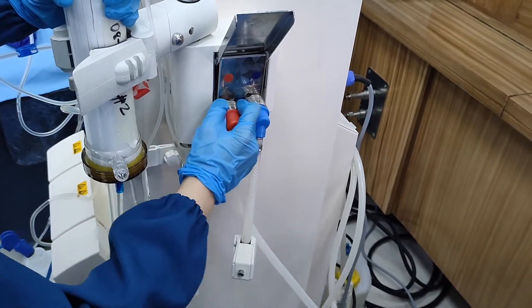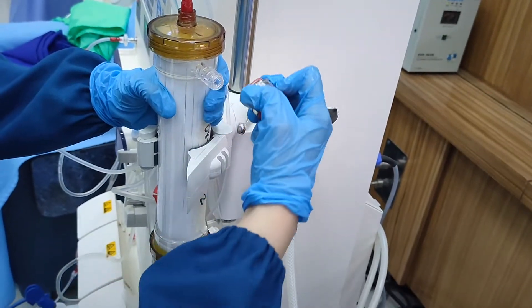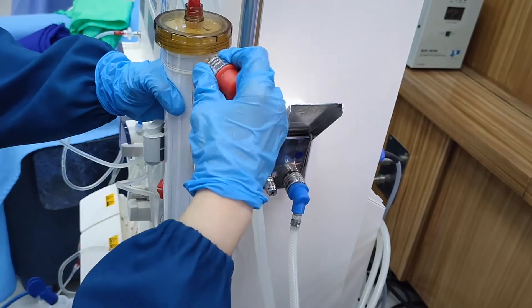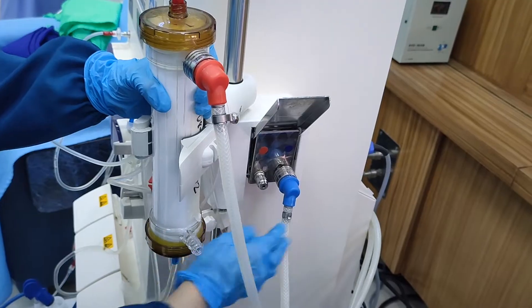Open the shunt cover and attach the couplings. The red couplings must be placed on top and the blue couplings at the bottom. Secure them well and close the shunt cover.